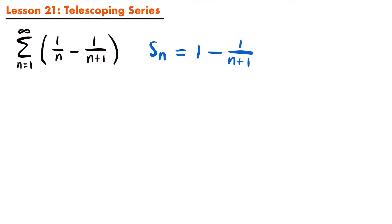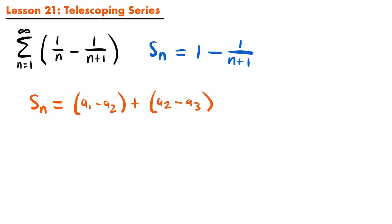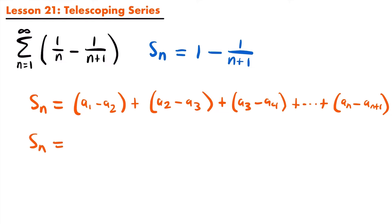For a telescoping series, the nth partial sum can be viewed as follows: our first term a sub 1 can be viewed as two separate parts, a sub 1 minus a sub 2, then the next term a sub 2 minus a sub 3, and so on, with negative a sub 2 and positive a sub 2 cancelling. This continues until the last term a sub n minus a sub n plus 1. All the middle terms cancel out, and the nth partial sum of a telescoping series equals a sub 1 minus a sub n plus 1.